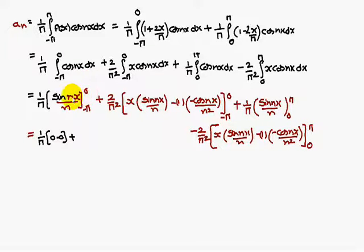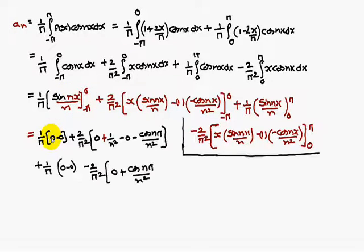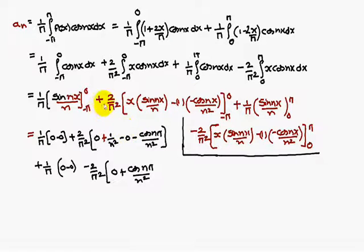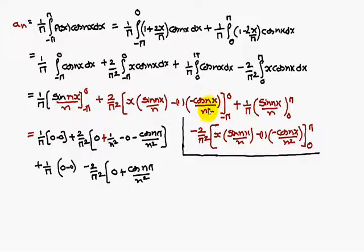For the third term: 1 by pi times sin nx by n between the limits 0 to pi. For the fourth term: minus 2 by pi squared times x times sin nx by n, minus cos nx by n squared, between the limits 0 to pi. Substituting the upper and lower limits, sin n pi equals 0, so those terms vanish. Substituting 0: cos 0 is 1, giving 1 by n squared. Substituting pi: cos n pi by n squared, and cos of minus theta equals cos theta, so cos n pi by n squared remains.